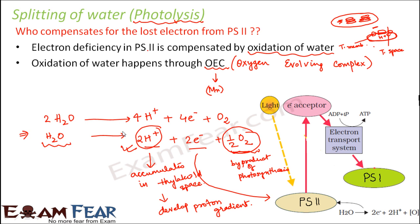To summarize: photolysis is the oxidation of water, which happens through the OEC — the oxygen evolving complex — containing manganese ions. This complex is activated by the loss of electrons from PS2. It produces hydrogen ions that accumulate in the thylakoid space, electrons that move into PS2 to compensate for the lost electron, and oxygen which is a byproduct of photosynthesis.